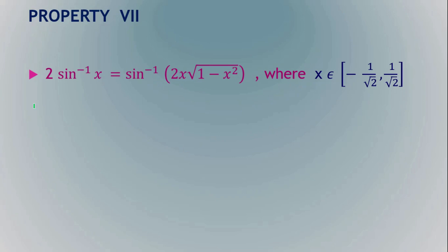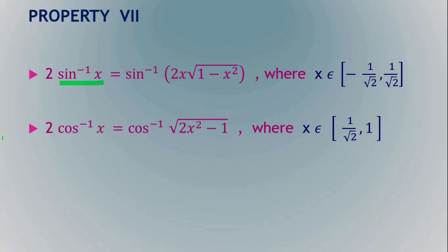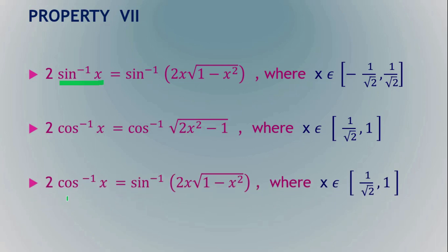The next property: 2·sin⁻¹(x) = sin⁻¹(2x·√(1 − x²)). For all these identities, like the previous ones, you can assume sin⁻¹(x) = α, so sin α = x, and then substitute back to get the result. Similarly, 2·cos⁻¹(x) = cos⁻¹(2x² − 1).